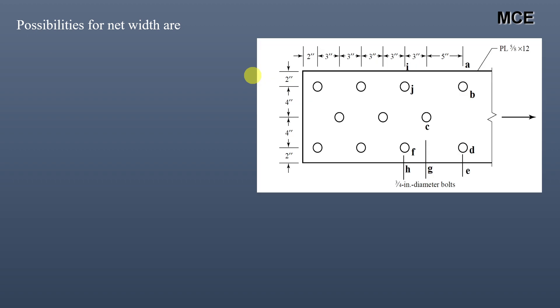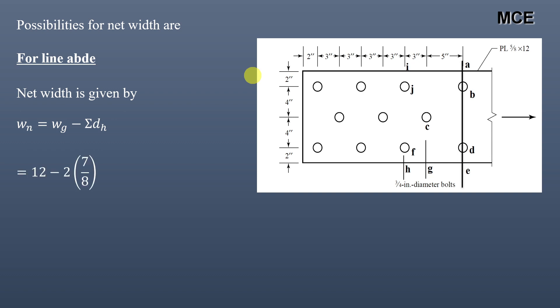The first possibility is along the straight line A-B-D-E. The net width is given as W_G − ΣD_H. W_G = 12 and there are two bolt holes passing along this failure line, so it will be 12 − 2×(7/8) = 10.25 inch.